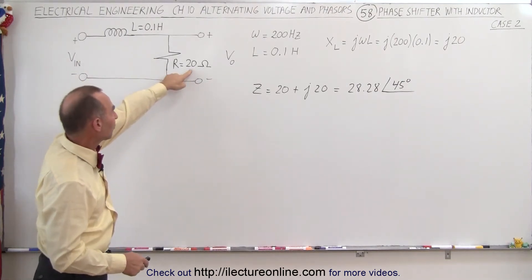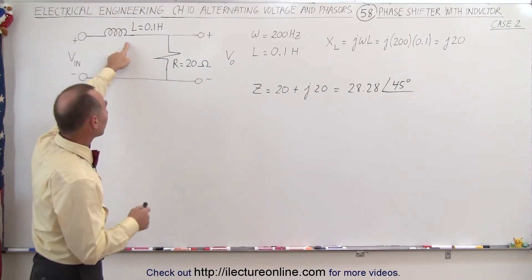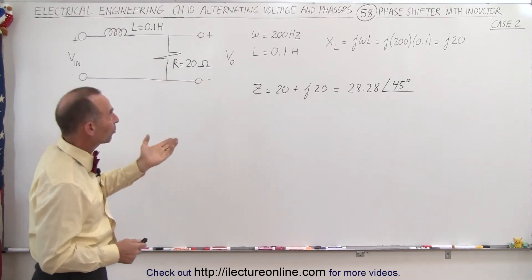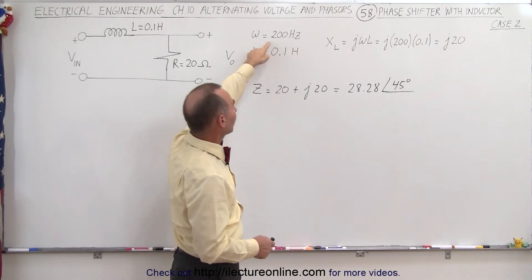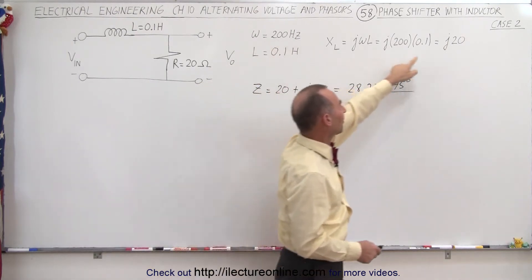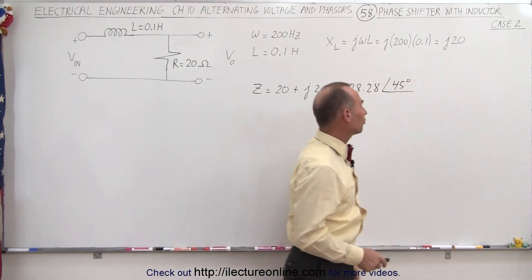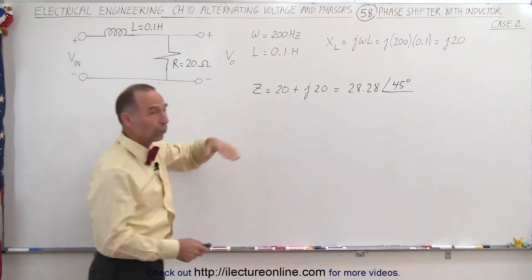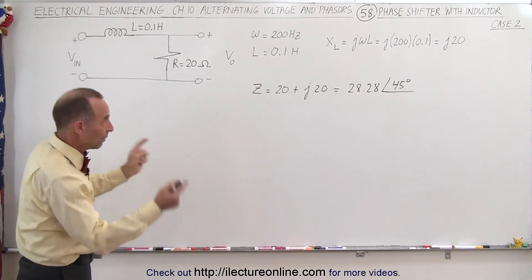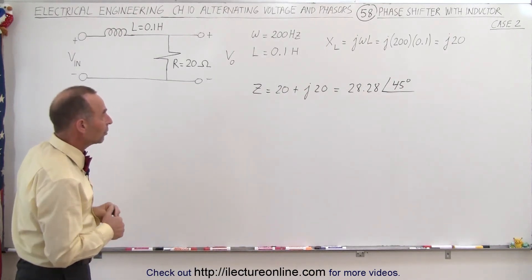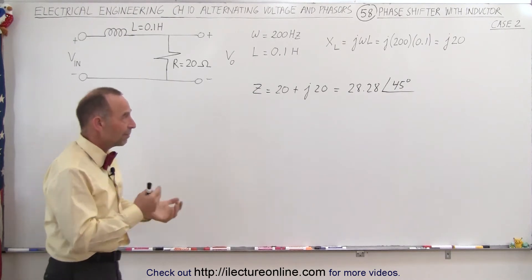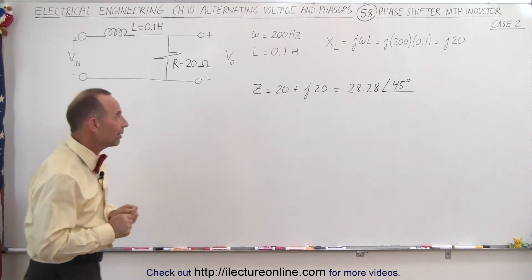Notice that the values are the same. We have a 20 ohm resistor and a 0.1 Henry inductor, in such a way that with an angular frequency of 200 Hz, we still have an inductive reactance of J20. Notice that the total impedance of the circuit, even though we exchanged the components, is still going to be the same: 28.28 as a magnitude with an angle of 45 degrees.